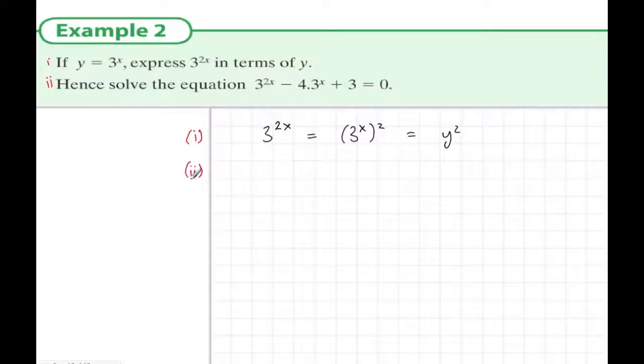In part 2, it does say hence, so we must use this fact to solve the equation. Just to clarify, that 4.3 means 4 multiplied by 3x. So we're going to let y equal 3 to the power of x. Instead of 3 to the power of 2x, that's y squared, as in the first part, and then we have minus 4 times y plus 3 equals 0. So we solve this quadratic equation in the normal way.